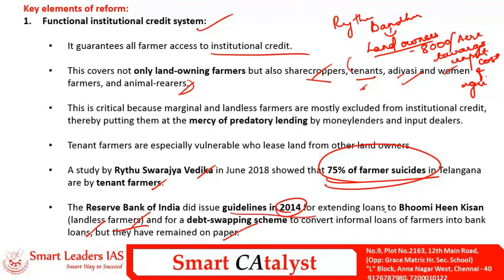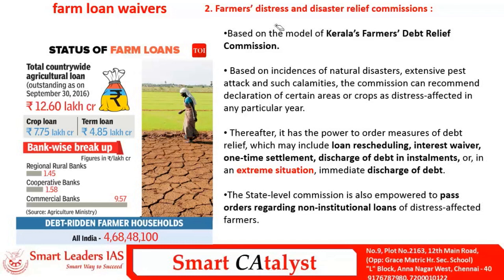The second proposed reform is related to providing compensation for disasters. The definition of disaster even covers drought, which has a manifold impact on the functioning of agriculture in India. If we go back to the annals of modern Indian history, we notice many famine commissions established to interact with farmers and rural people, based on which they finalized compensation amounts. This was an inclusive approach that was not followed in independent India until recently, when the Government of Kerala initiated this colonial practice of creating a famine or debt relief commission.